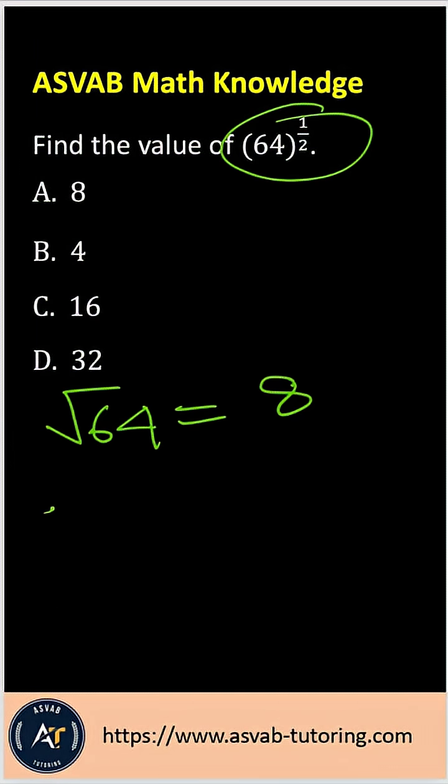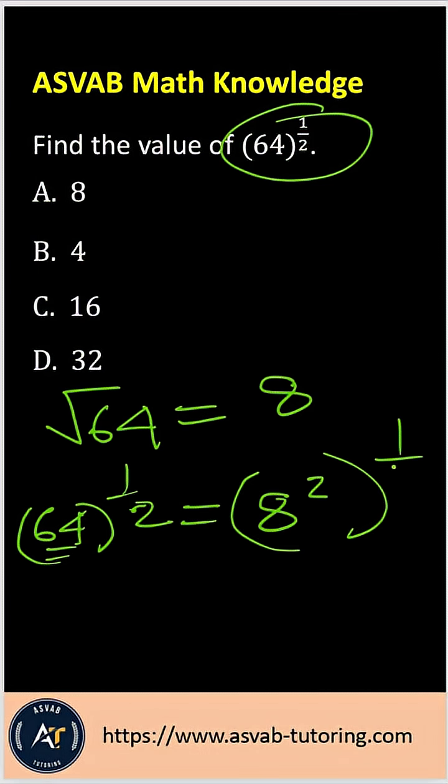So you could write that as 64 to the power 1 half. You could write inside the number in terms of exponent of 2. So you could write here 8 squared and then 1 half on the outside. You see here now 2 to cancel out, that gives you the answer 8.